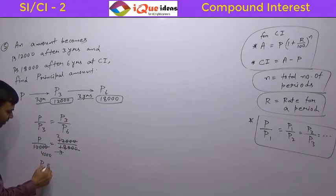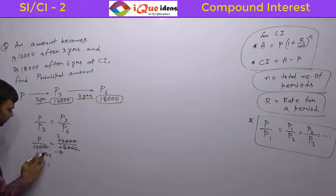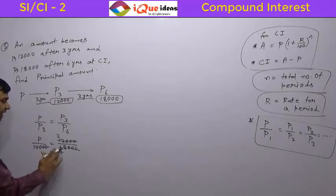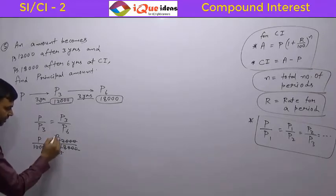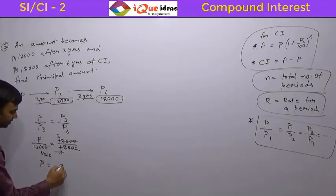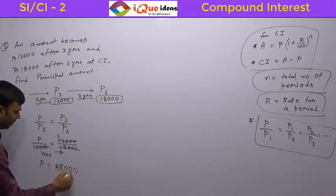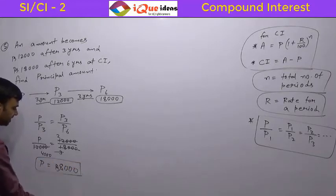So P is equal to 4,000 into 2. This cross-multiplies to the other side, so 4,000 into 2 is Rs. 8,000. That means the principal amount in this case is Rs. 8,000.